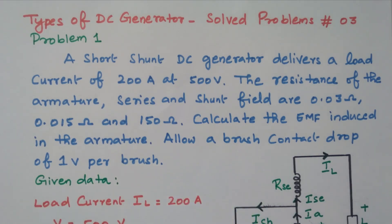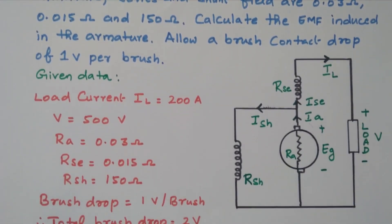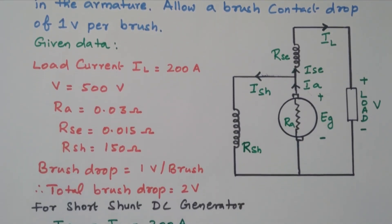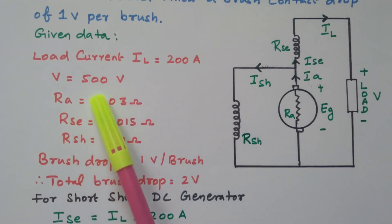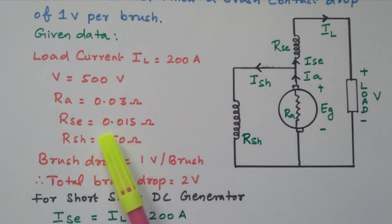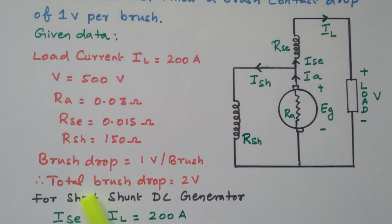Now we will see the given data as well as the diagram for the short shunt DC generator. The load current is 200 ampere, terminal voltage is 500 V. RA is 0.03 ohm, RSE is 0.015 ohm, RSH (shunt field) is 150 ohm. Brush drop equals 1 volt per brush, so the total brush drop equals 2 volts because there are 2 brushes.